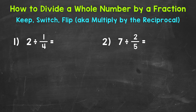Let's start with dividing whole numbers by fractions. When working with fractions and division, we need to remember three steps: keep, switch, flip. We can also think of it as multiply by the reciprocal. When we flip a fraction, that's called the reciprocal. So this means we're going to use multiplication to solve these, which actually makes the process simpler. How and why this works is a topic for another video — I'll drop that link down in the description.